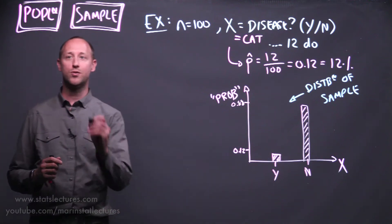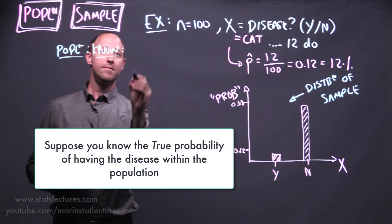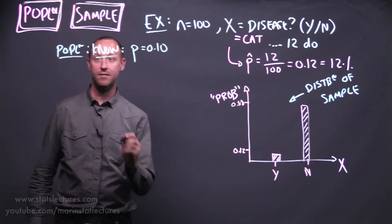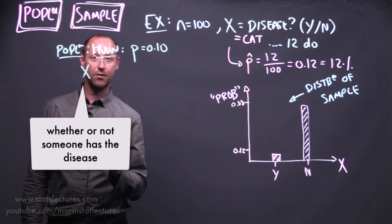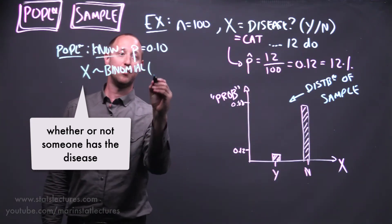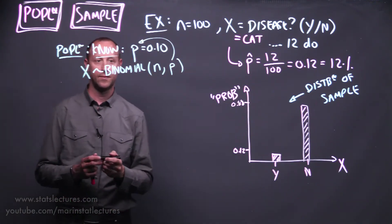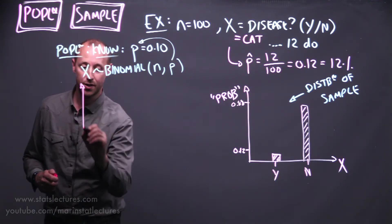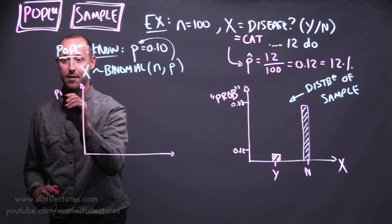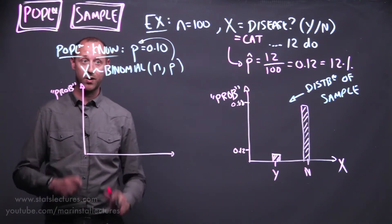Continuing on in this example, suppose we knew at the population level that the true probability of having the disease is 10%, and some other conditions are met. Here we might think of x — whether or not someone has the disease — as following a binomial distribution with parameters n trials and p being the probability of success, here 10%. This is the same concept as the bar chart, except rather than being for a sample of data, this is for the entire population, and we assume we know the truth about it.